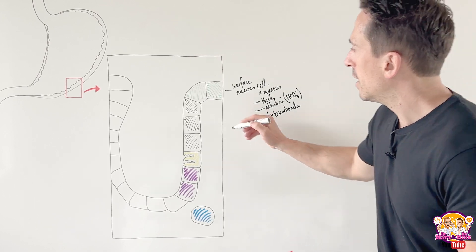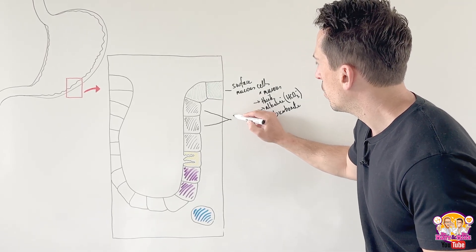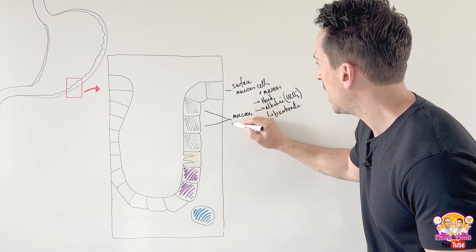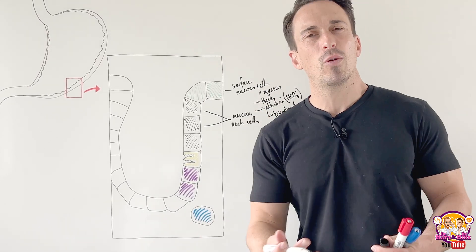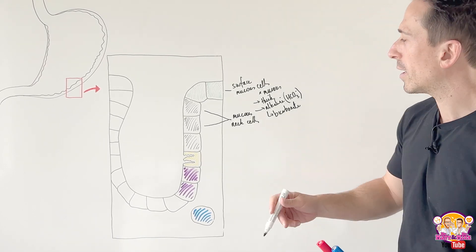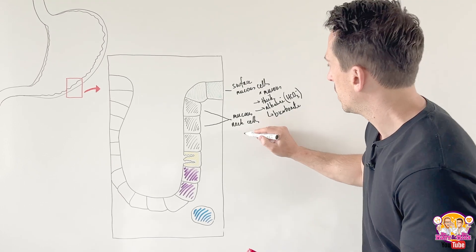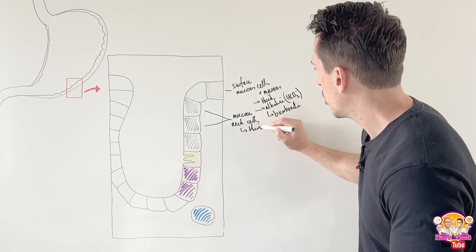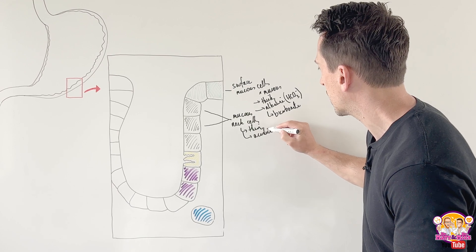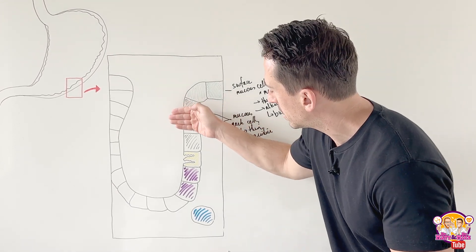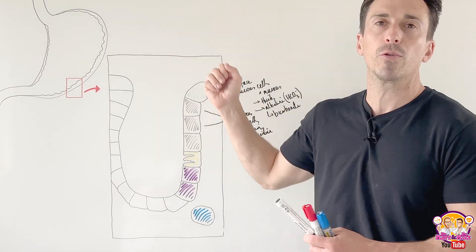These are also mucus cells, but these are called mucus neck cells. We don't really know a lot about mucus neck cells, but we do know that they release a thin mucus — a thin mucus which is often referred to as being slightly acidic. They think it's potentially being released to help maintain these other products as they move up through to the surface.